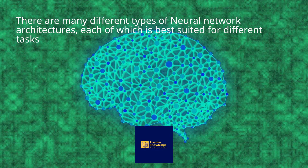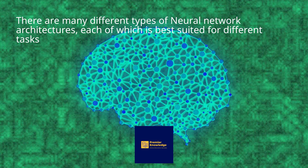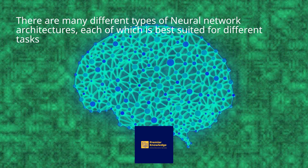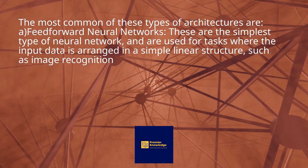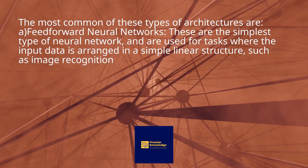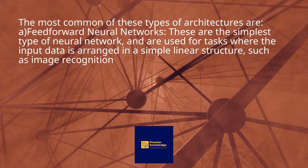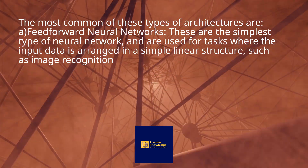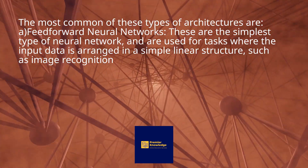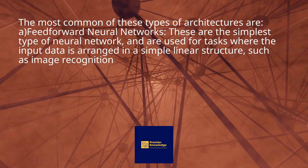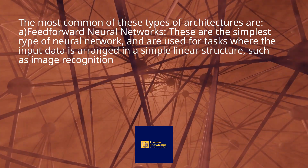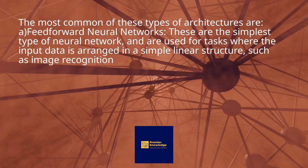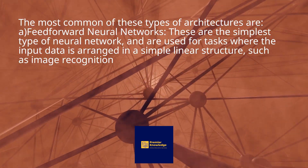There are many different types of neural network architectures, each of which is best suited for different tasks. The most common of these is feed-forward neural networks. These are the simplest type of neural network, and are used for tasks where the input data is arranged in a simple linear structure, such as image recognition.